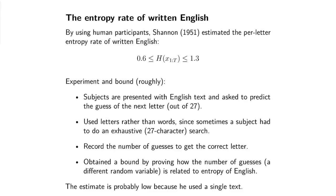Let's quickly do the Shannon experiment. I've got a sentence in my head and we're going to reconstruct it. I'll give you the first letter: 't'. Guess the next — 'h', correct, one guess. Next letter — 'e', correct, one guess. Next — space, correct, one guess. So far it's almost zero bits because guessing is easy.